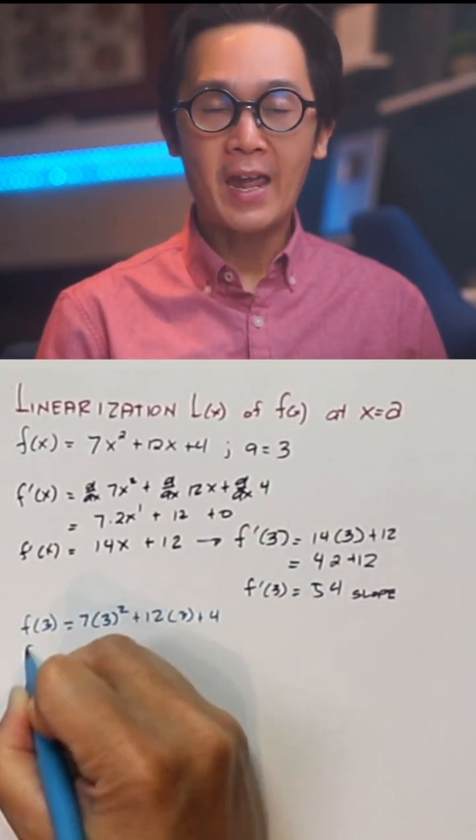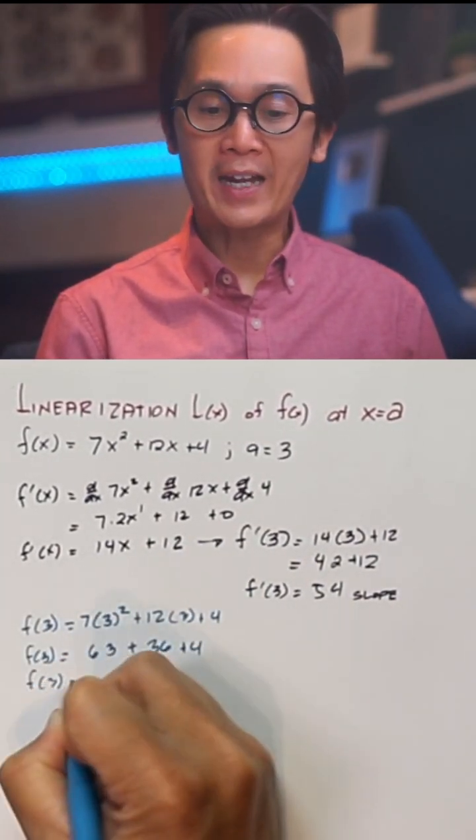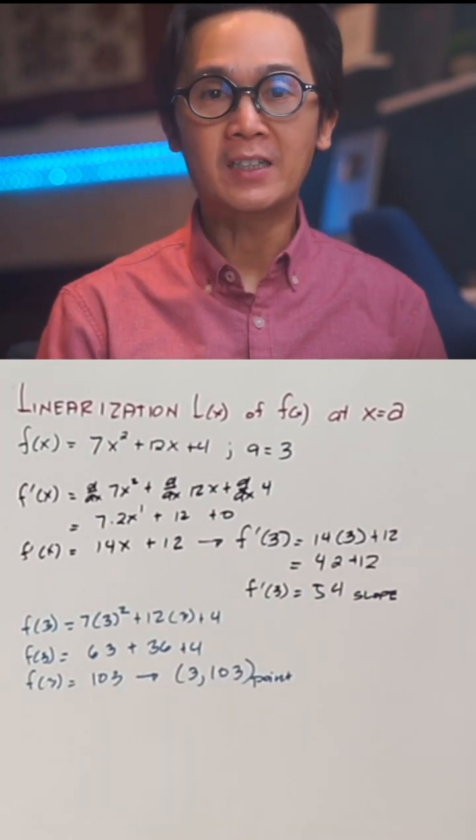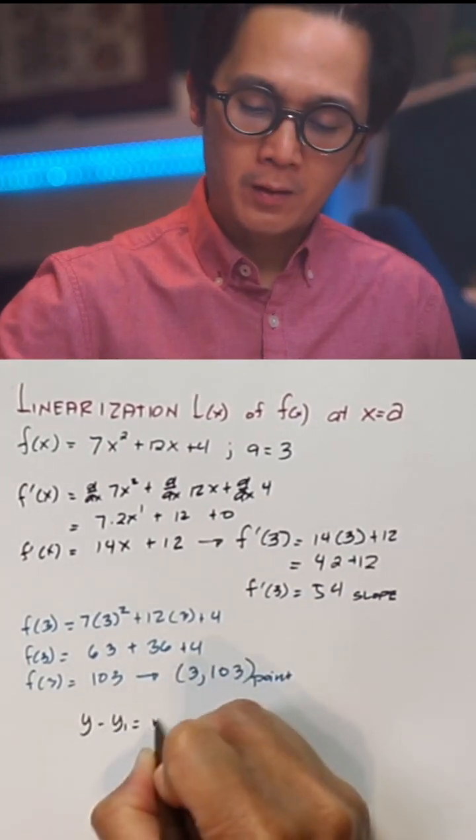Now let's find f of a or the value of y at x equal to 3. So now that we have our point and we have our slope, let's write the tangent line at x equal to 3.